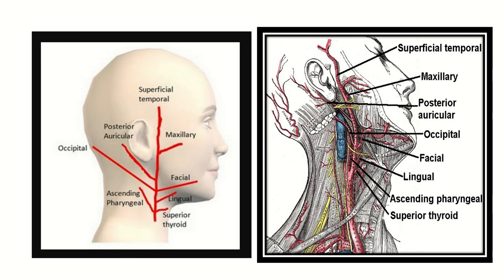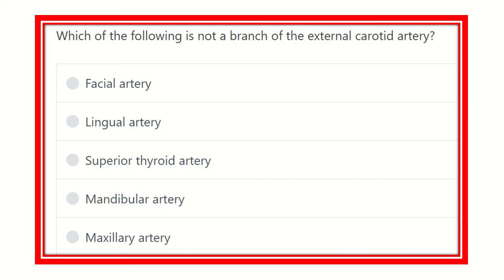Welcome everybody to another question and answer session for the MRCS exam. The question is: which of the following is NOT a branch of the external carotid artery? The options are: facial artery, lingual artery, superior thyroid artery, mandibular artery, and maxillary artery.